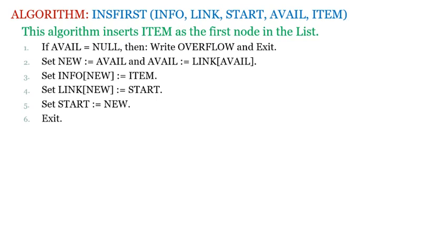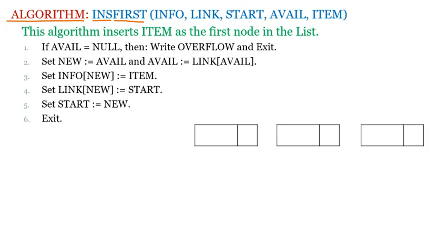We are learning the algorithm for inserting an element into a linked list at the first position. This algorithm is called 'ins_first' — insert at the first position. We need an available list, which is a list containing available free nodes. Every node has an info part, which holds the information of the element, but in the available list the info part is empty since it represents free space.